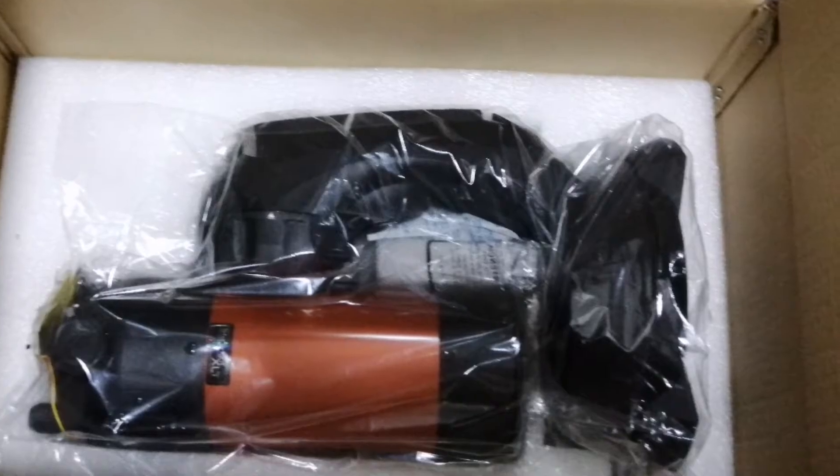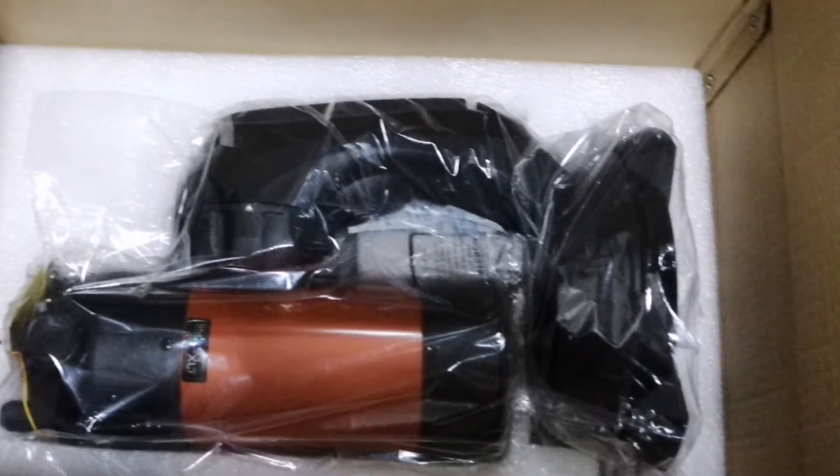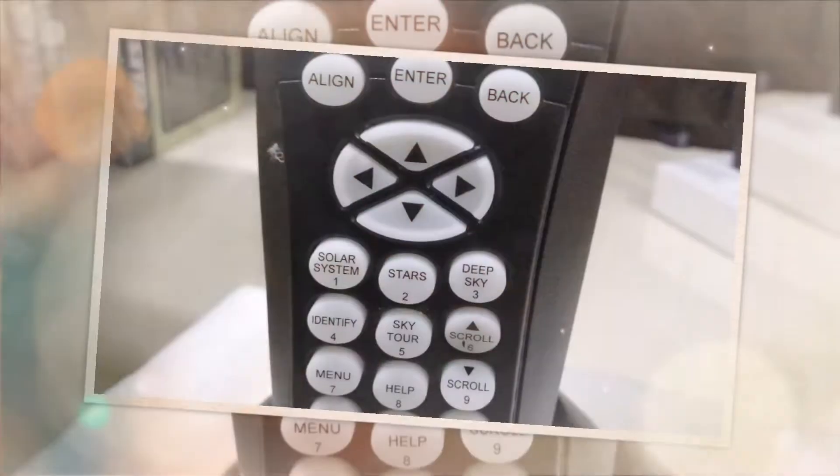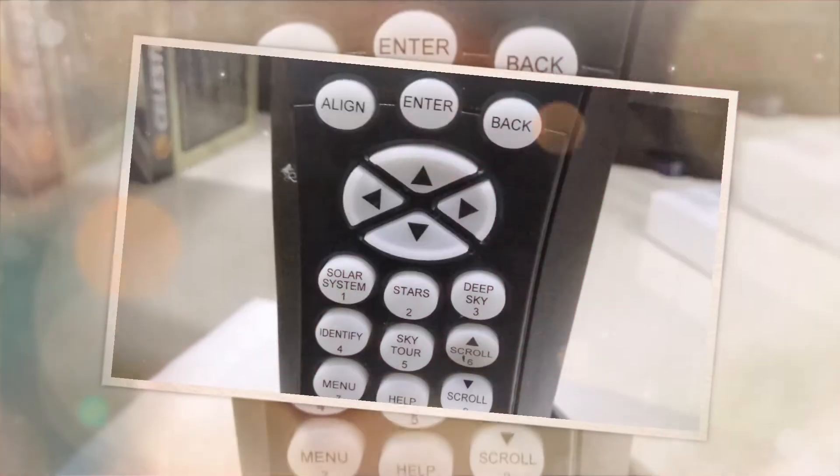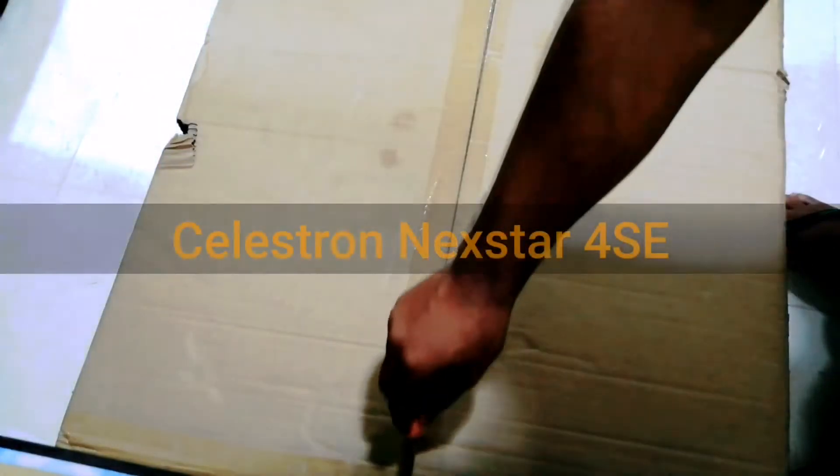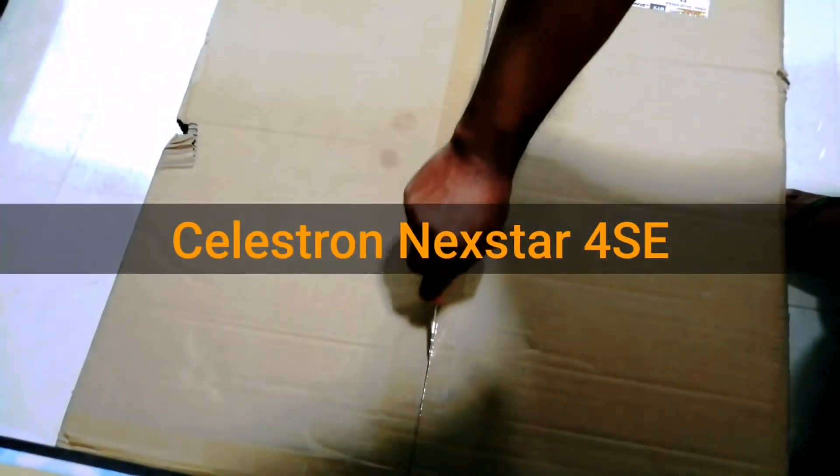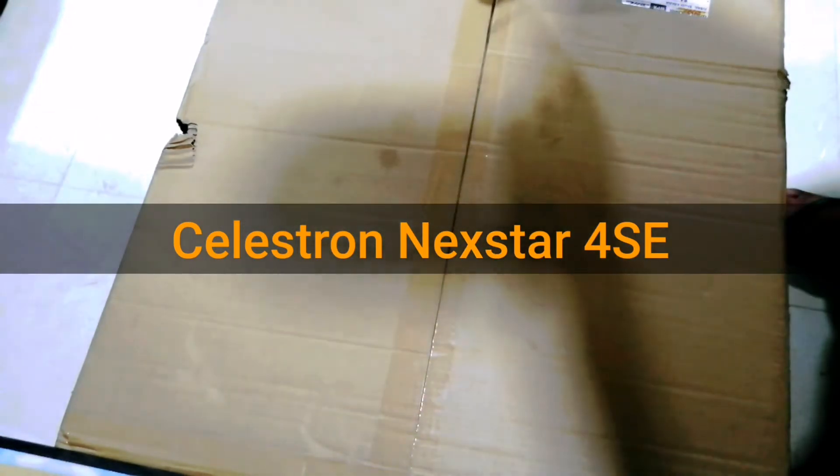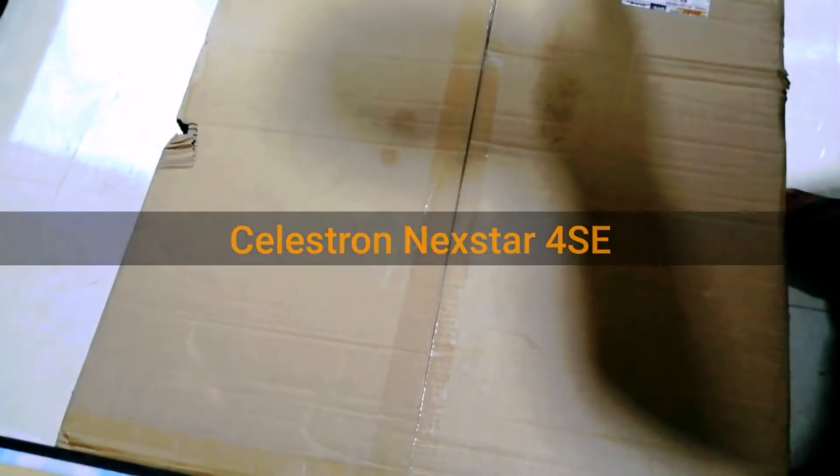Celestron NexStar 4SE are beginner telescopes for amateur astronomers. The 4SE's 102mm aperture isn't huge, but the portability of this rig far outweighs any size limitation. And Celestron's nicely coated optics make the most of every photon fetched.